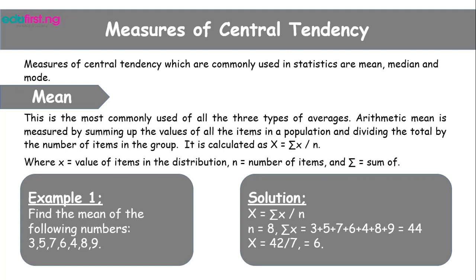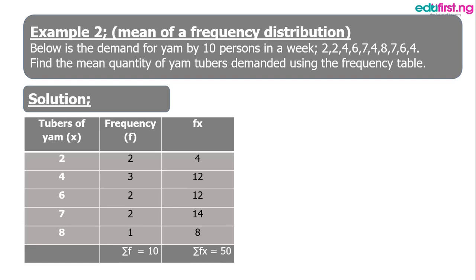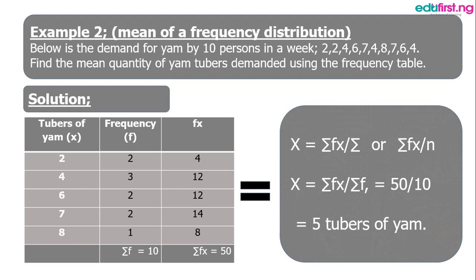Example 2 relates to the mean of a frequency distribution. Below is the demand for yam by 10 persons in a week. The question says: find the mean quantity of yam tubers demanded using the frequency table. The table is divided into three columns — the first carrying the tubers of yam, the second the frequency, and the third the product of tubers of yam and frequency. Substituting the values into the formula for calculating mean gives 5 as the answer, meaning that five tubers of yam is demanded by the consumers.